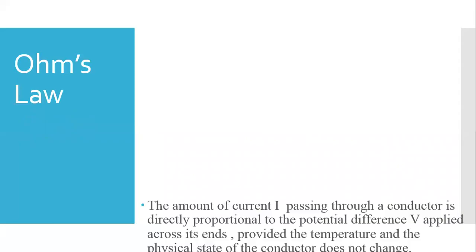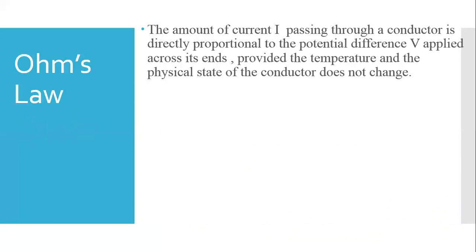Ohm's law — Statement: The amount of current I passing through a conductor, that means a wire, is directly proportional to the potential difference V applied across its ends, provided the temperature and the physical state of the conductor do not change.